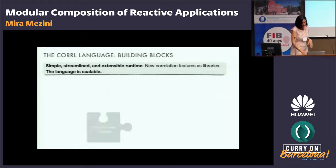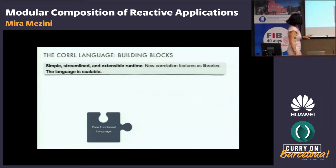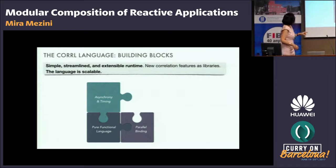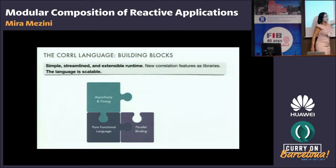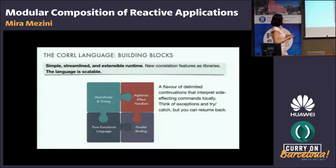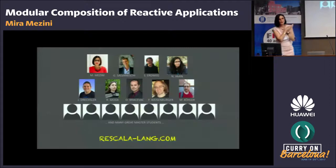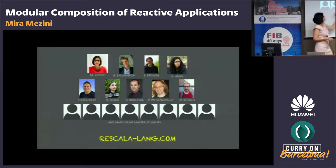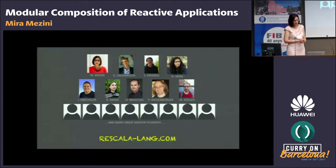The key building blocks of the language are a core functional language, on top of which we have added an imperative part for supporting asynchrony, timing, and binding. On top of this, there are algebraic effect handlers — going back to Plotkin — which are a flavor of delimited continuations that interpret side-effecting commands locally. We can think of them as try-catch blocks, but they resume back to the control flow of the trigger. With this I want to conclude my talk with some pictures of people involved in the development of ReScala and Coral. Beyond those shown here, there are quite a number of master's students that have been involved in the work so far. Thank you, and I'm happy to take questions.